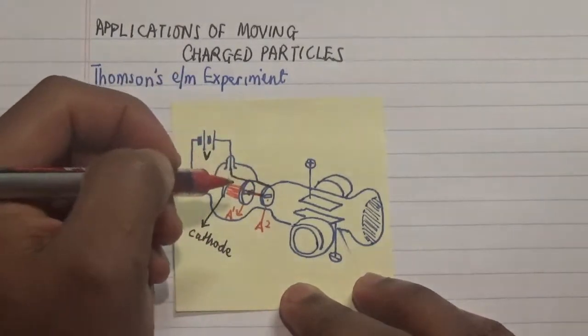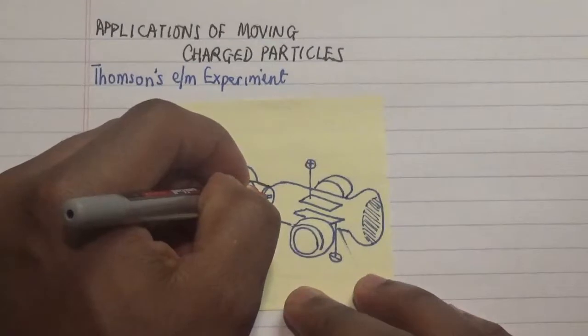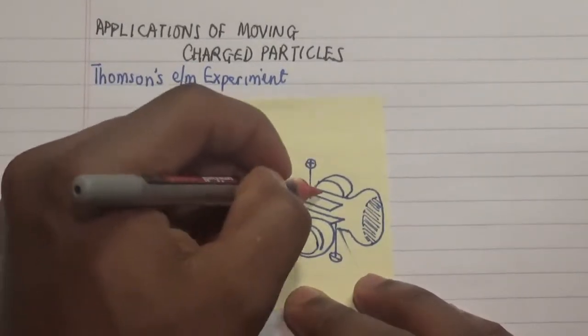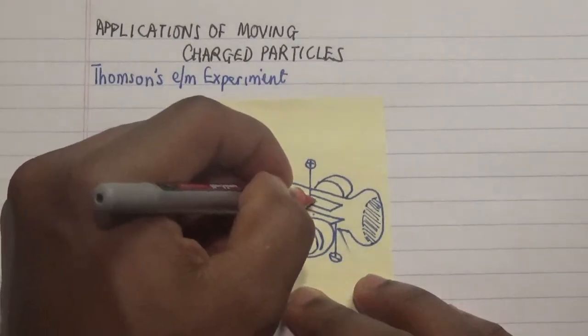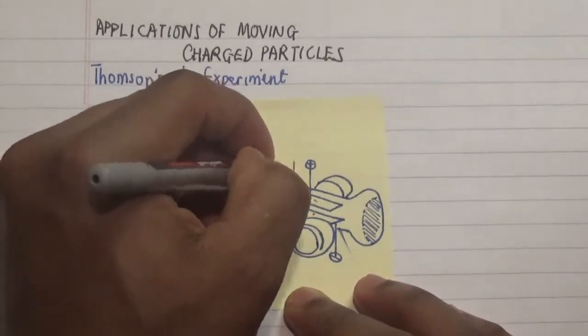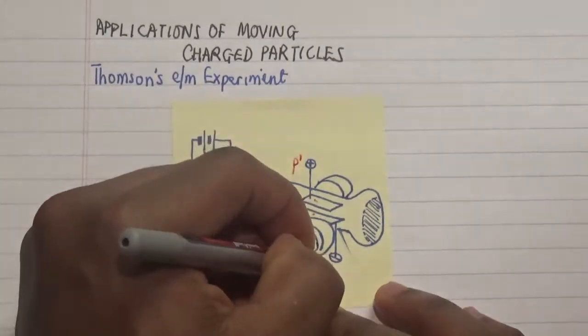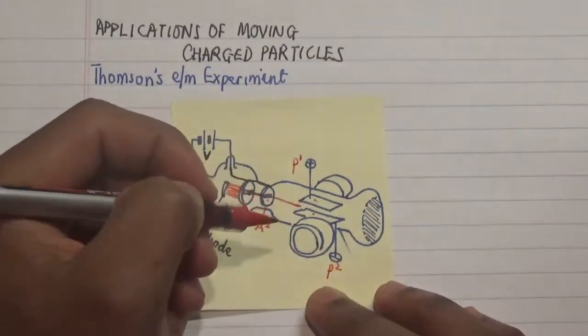What happens next is that once the electrons come out they approach this particular slit, and there are actually two plates over here. We have P1 which is positively charged and P2 which is negatively charged.